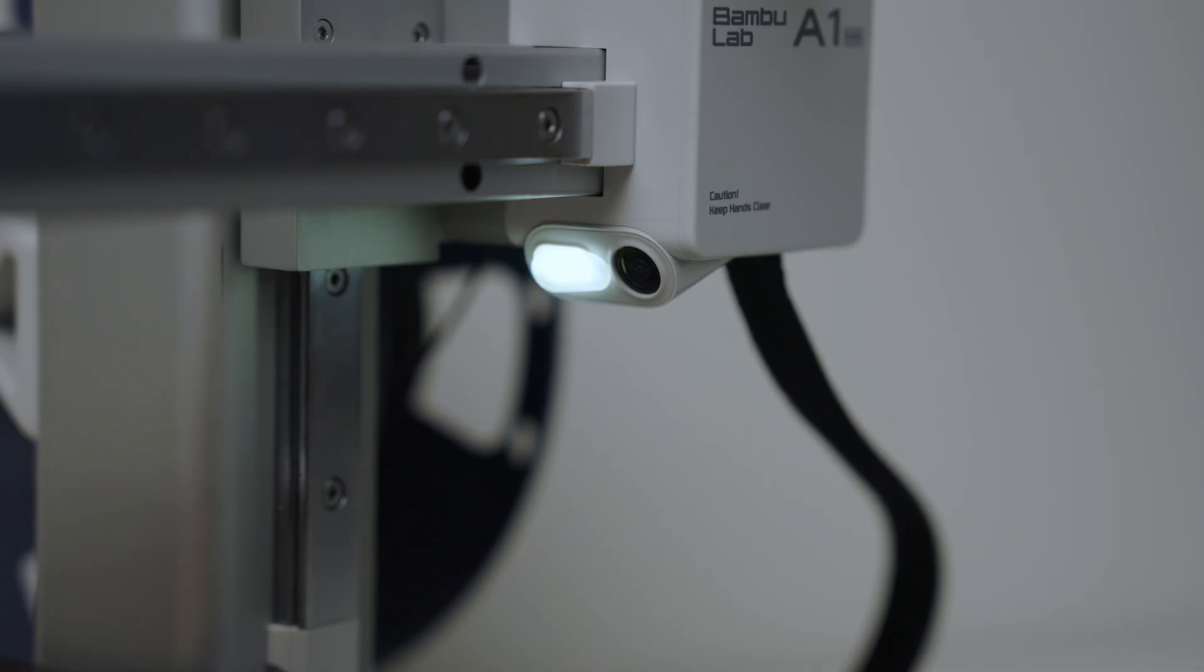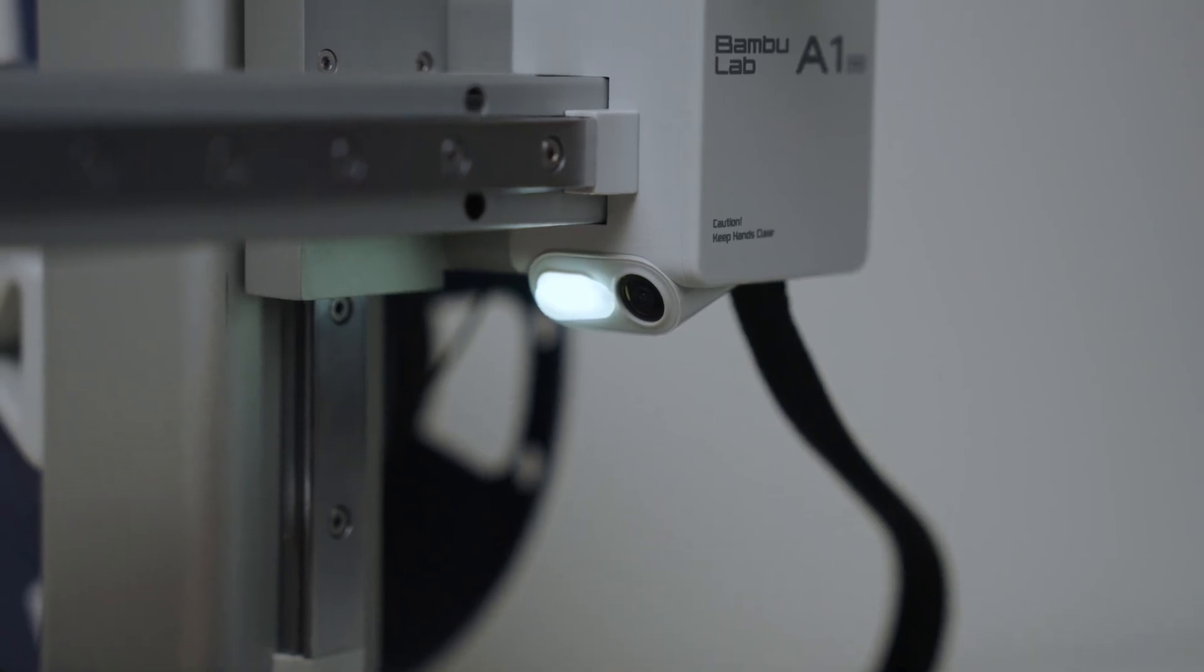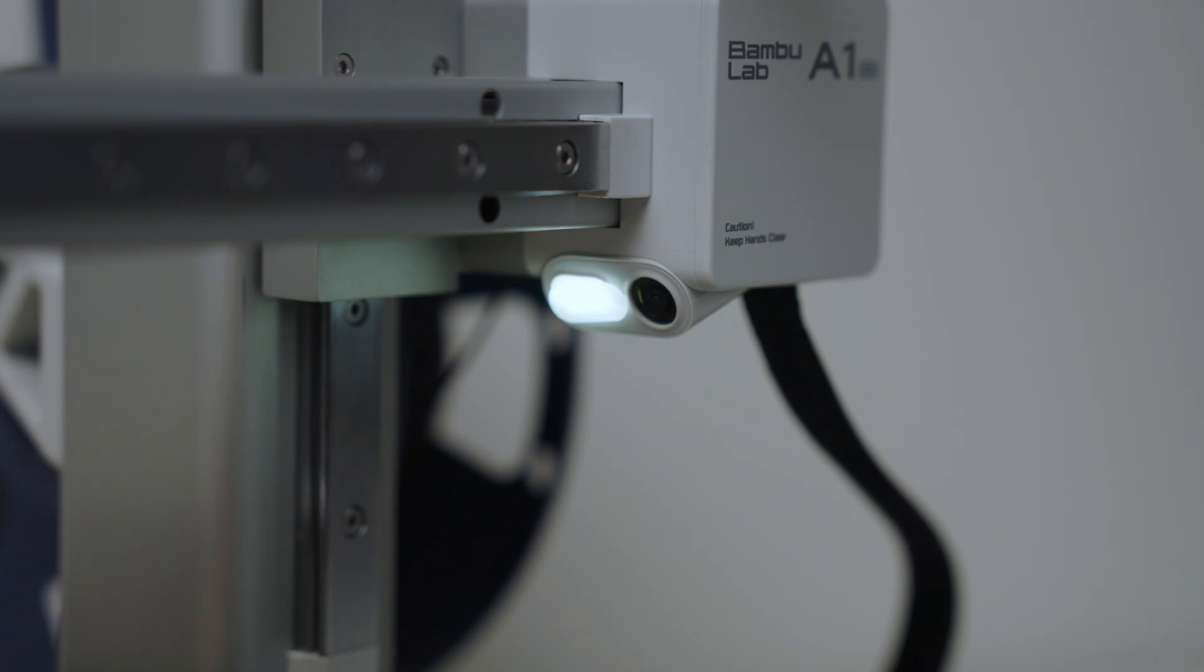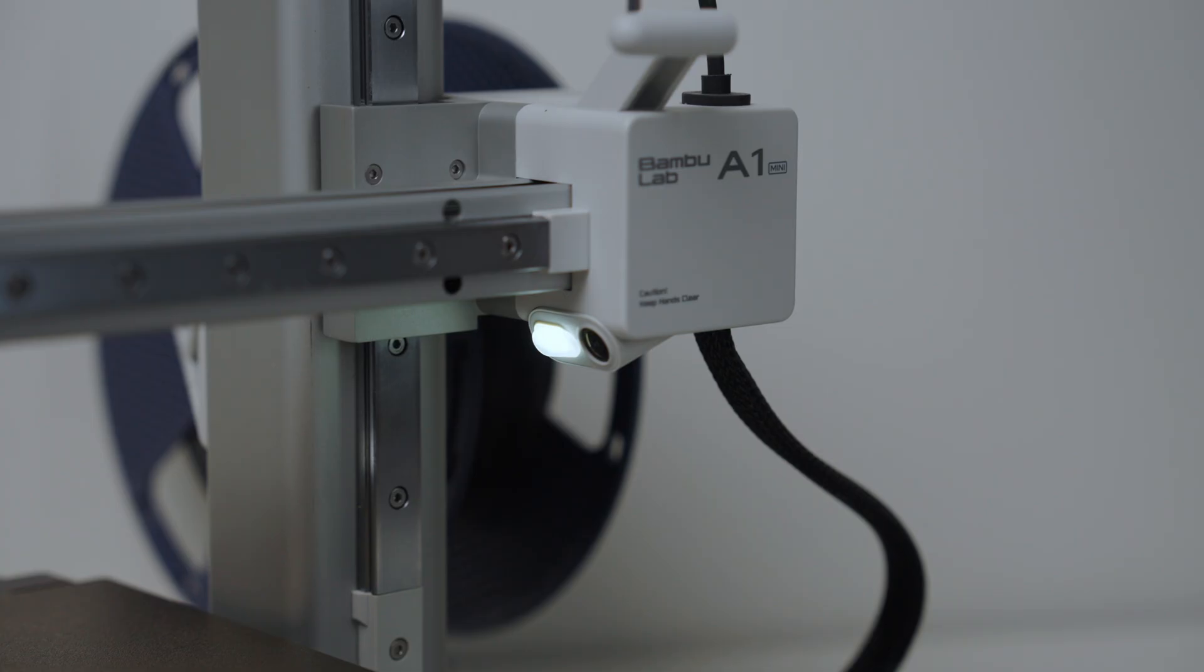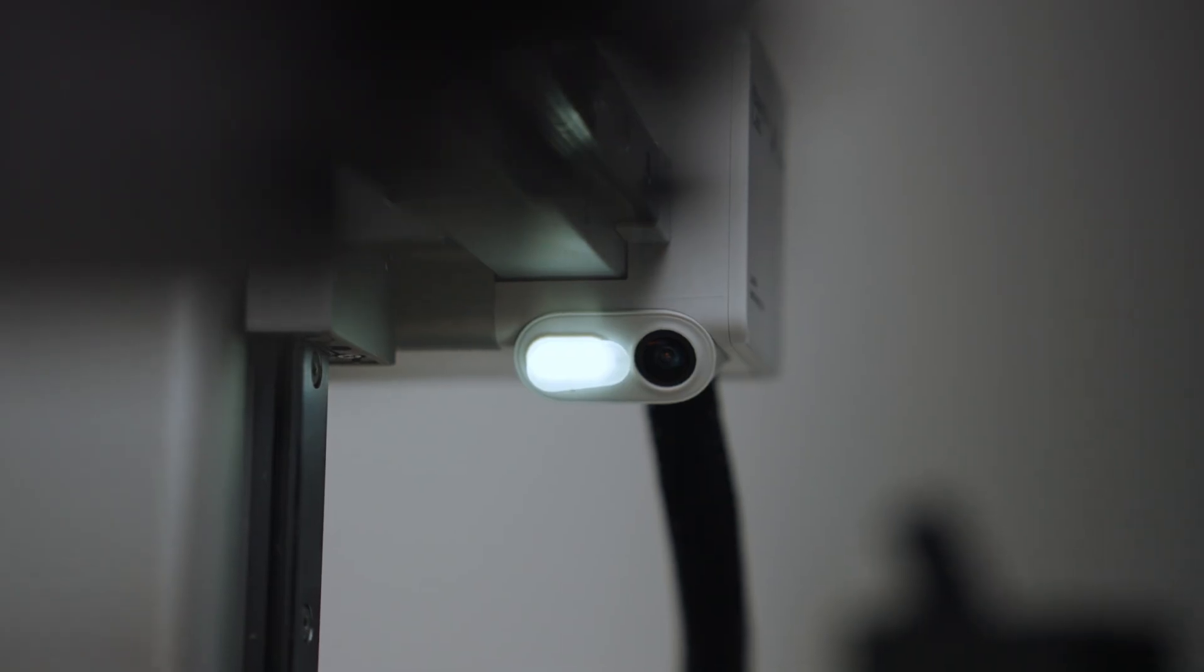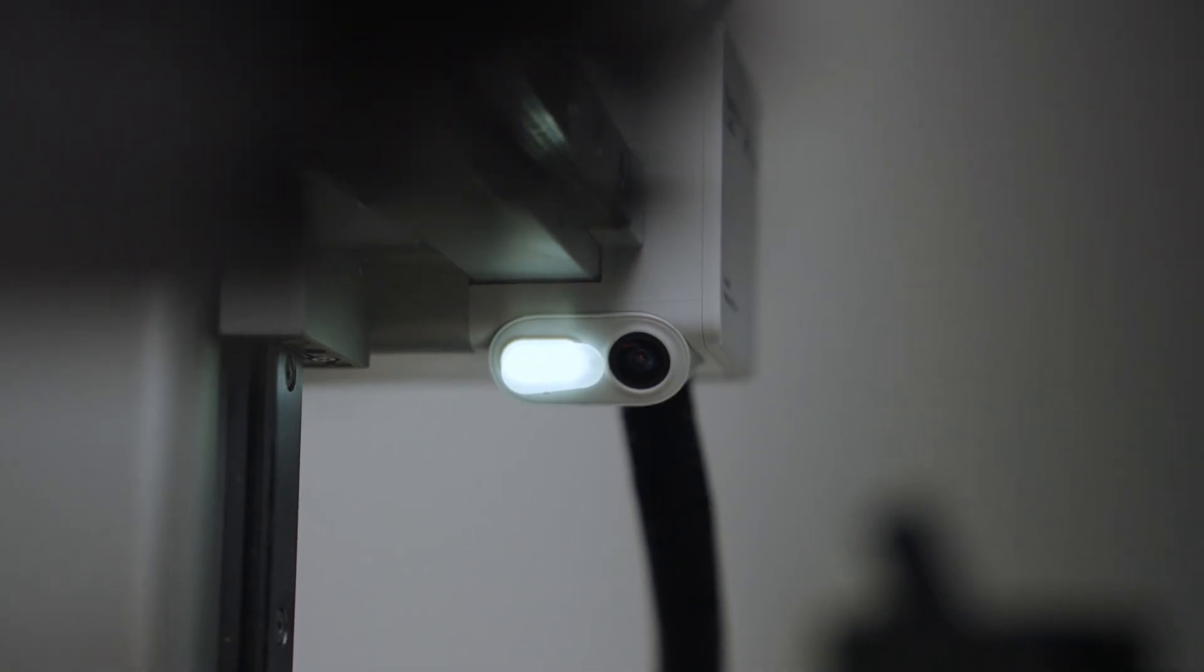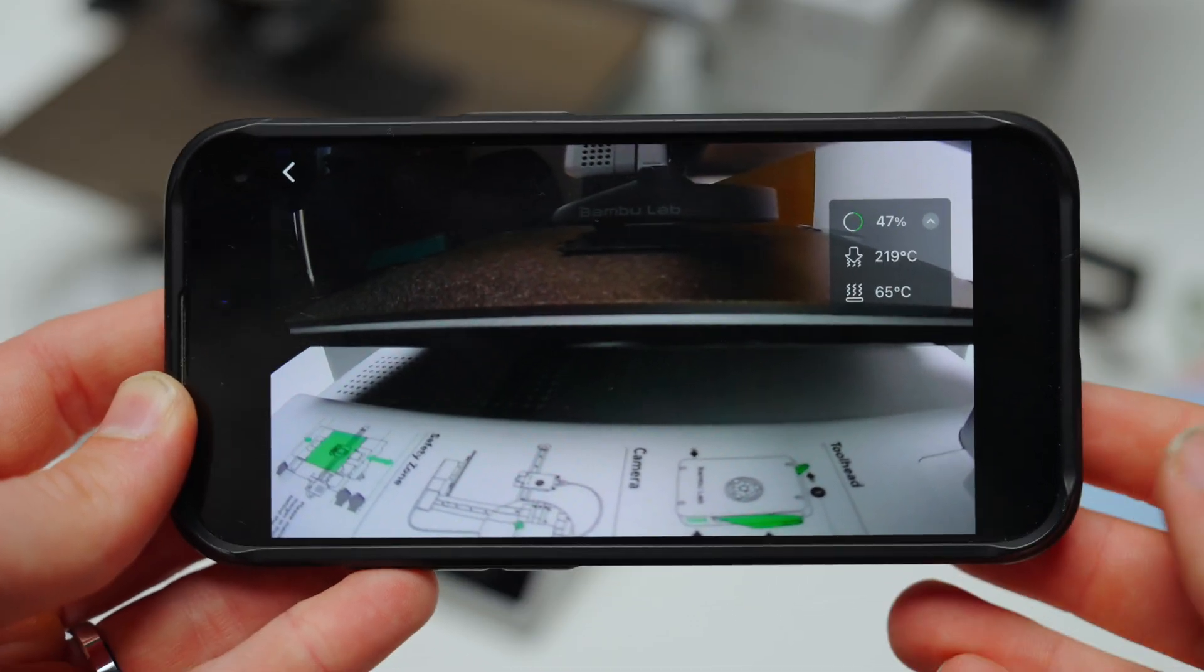There also is a low frame rate camera when you're printing, which will be right up here. And it's kind of funny. They list it as a low frame rate camera. And I think they do this because they don't want to say how the frames actually are. And in my opinion, it's like one frame every three or four seconds. I basically use it to watch my first layer of the print, make sure nothing goes bad. And then I don't use it anymore.